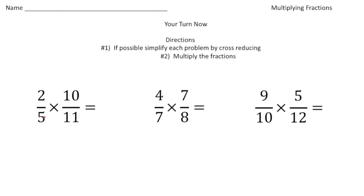5 goes into 10 twice, and 5 goes into 5 once. The 2 and the 11 can't be reduced. So now let's multiply. 2 times 2 is 4. And then the denominators, 1 times 11 is 11. And there's our answer.